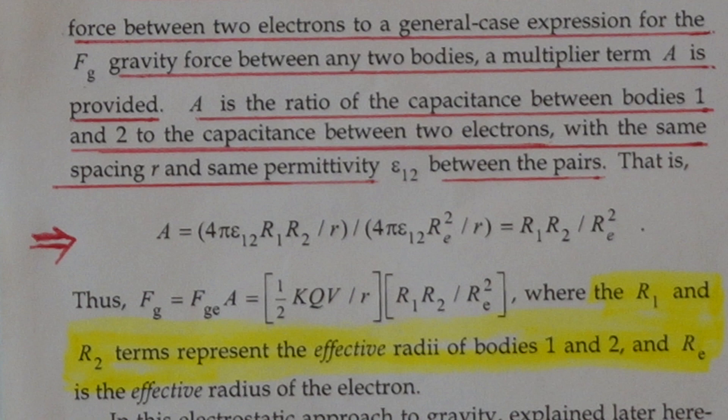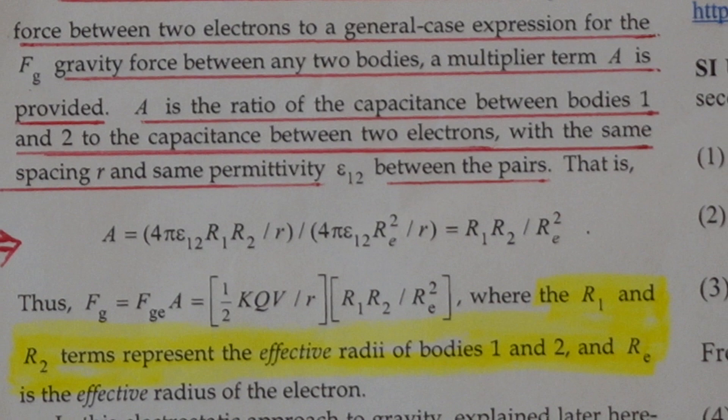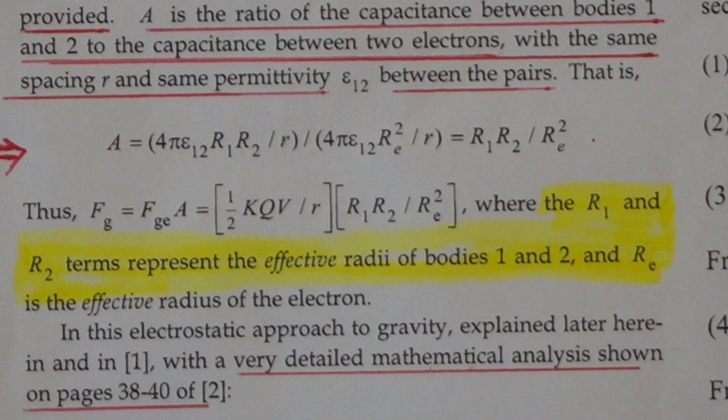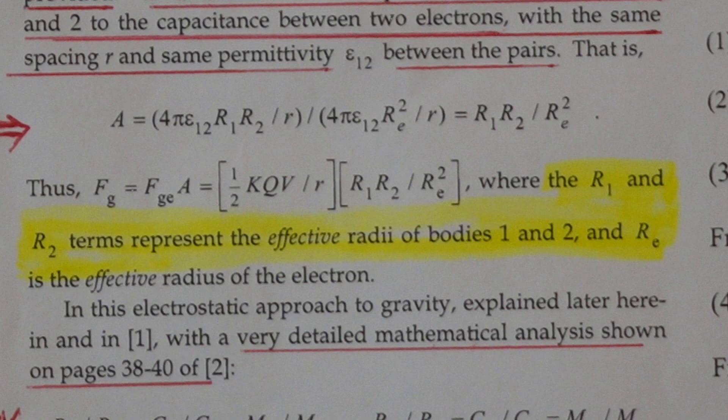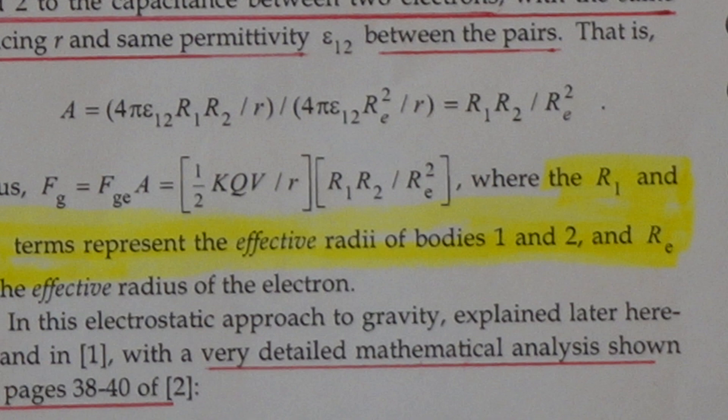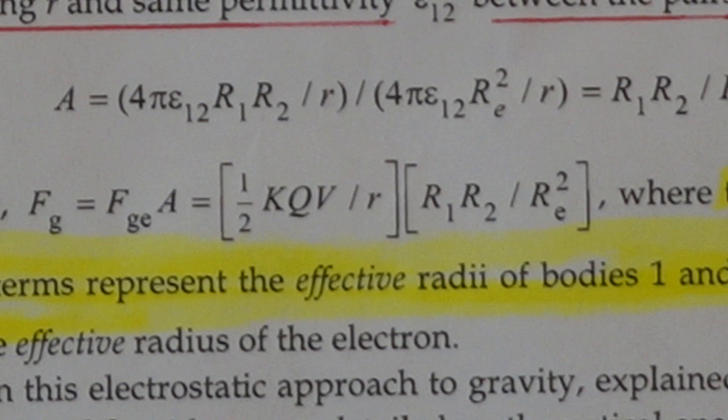He's saying F of G — the force between two general masses — is equal to FGE times A, where FGE is the force between two electrons. Then you apply this A factor to take the force from two electrons to two general masses. And this equation here is wrong, because A is wrong. Figure that one out. R1 and R2 terms represent the effective radius of bodies one and two, and the effective radius of an electron.